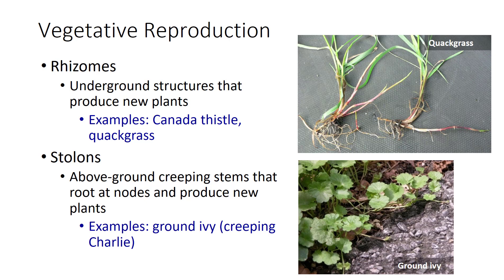Weeds that can reproduce vegetatively have an advantage in areas that are not tilled regularly and often pose serious long-term problems. Rhizomes are underground stems that root at nodes and allow the plant to reproduce and spread vegetatively. Canada thistle and quackgrass are two weed species that reproduce by growth of sturdy rhizomes. Stolons are above-ground weedy stems that can root at the nodes and produce new plants. Ground ivy, also known as creeping charlie, is an example of a weed that reproduces effectively by stolons.